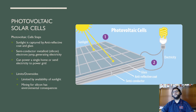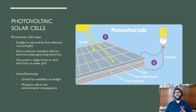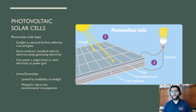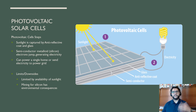The first type is photovoltaic solar cells. Sunlight is captured by anti-reflective coatings — you want them to gather in and not reflect the sunlight back. You need to have a semiconductor, which is a metalloid from the periodic table with properties of both. Silicon is the key material, and sunlight causes the electrons to jump on the silicon, generating electricity.